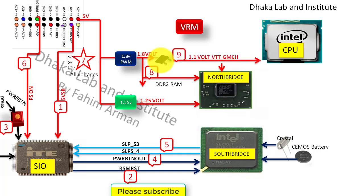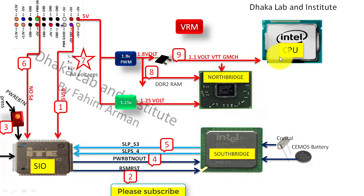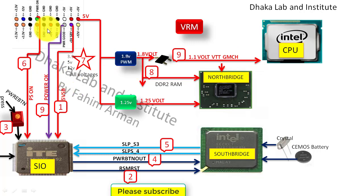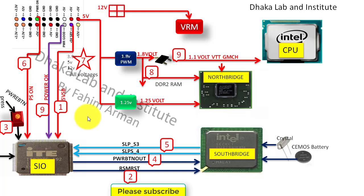The 1.8V from the RAM section also enters a linear regulator and is converted into 1.1V VTT, which goes to the North Bridge. Around 1.1V to 2.8V will also go into the CPU. If these are OK, then the white or grey color wire will provide a power OK signal to IO. Meanwhile, the VRM section will get 12V from the 4-pin connector.